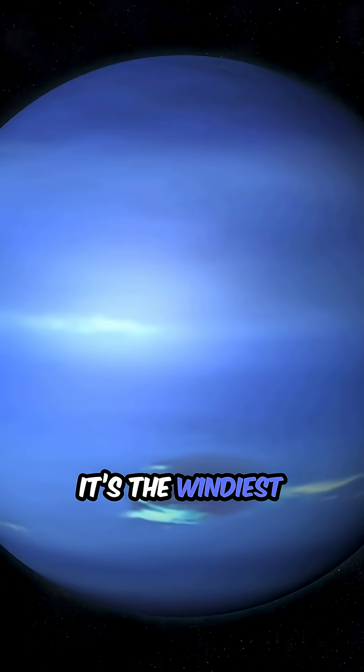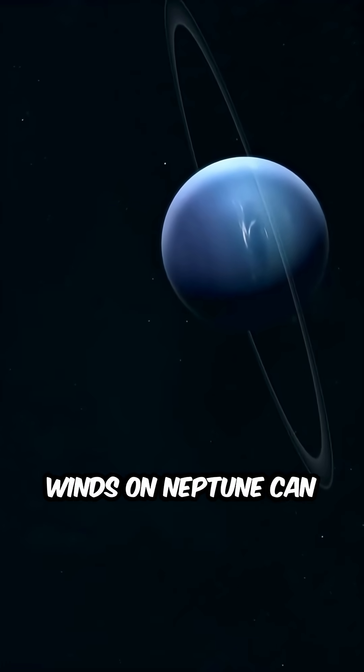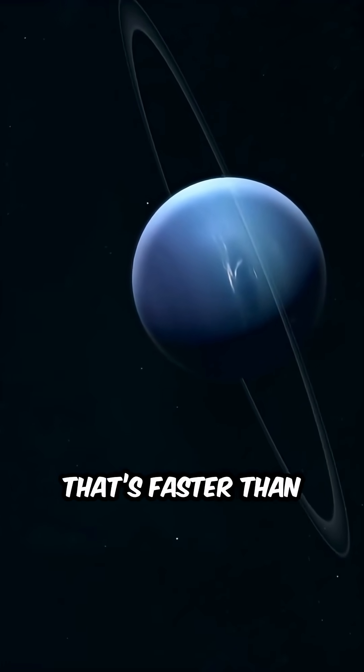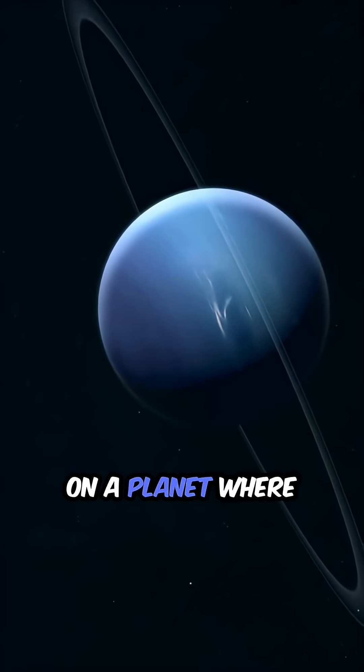Did you know that it's the windiest planet in our solar system? Winds on Neptune can reach speeds of over 1200 miles per hour. That's faster than the speed of sound. Imagine standing on a planet where the winds could whip you away in an instant.